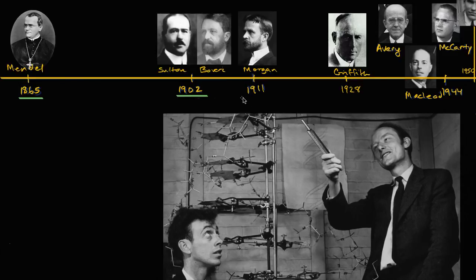Then we start having a lot more evidence. Morgan was able to show that a mutant eye color trait seems to be passed on in a way that shows it is on the X sex chromosome. He and his team started doing a lot more work, especially with fruit flies, to show that chromosomes are the basis for where these heritable factors are.